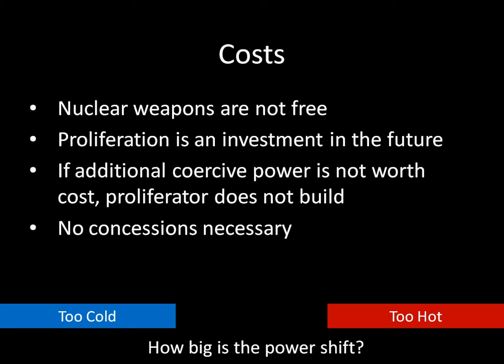How many things other than nuclear weapons has the United States spent more money on? You might think nuclear weapons are pretty cheap—not as expensive as having a huge army—so lots of things would have cost more. That would not be very right. There are only two things the United States has spent more money on during the nuclear era: conventional military spending and social security. Everything else—every other program—the United States has spent less than the cumulative cost of the nuclear program.